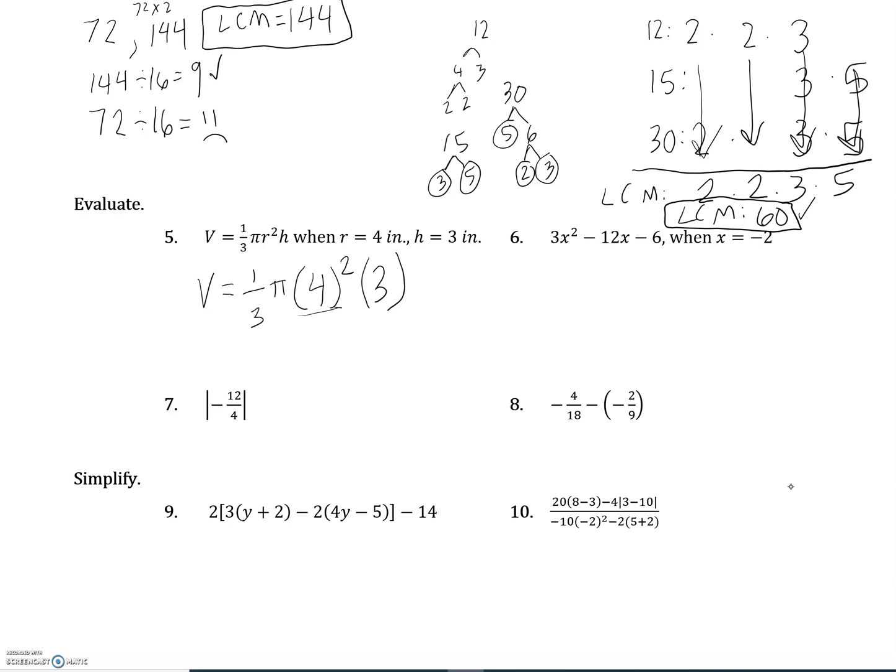I'm going to start simplifying what I can. So order of operations, I'm going to do the exponents first: one third times pi times 16 times 3 is 48. And because we're multiplying, I can kind of rearrange these so I can deal with the fraction before I deal with pi. So I'm going to do one third times 48, which is 16 times that by pi in the calculator. And you can use 3.14 or you can use the pi button on your calculator. You get 50.27, I'm rounding there to the second decimal place. And it was in inches, so this is inches cubed for volume.